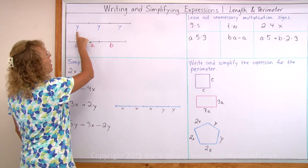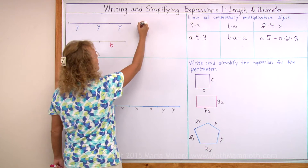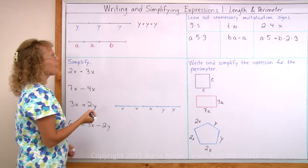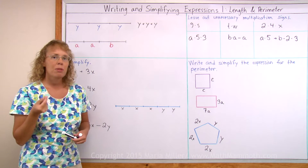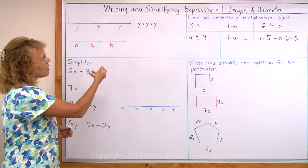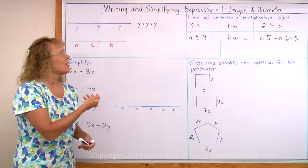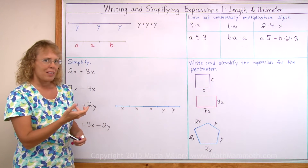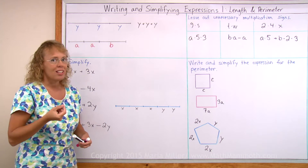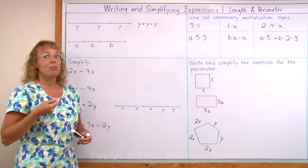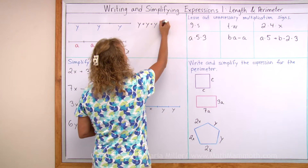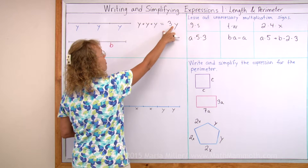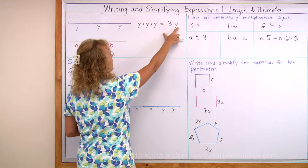That would be y plus y plus y. We add those three lengths. But there is a simpler way to write this expression because this is repeated addition — just like if here was 81 plus 81 plus 81, there's a quicker way, and that is multiplication. Multiplication is repeated addition, so this is three times y, written as 3y. I don't have to write a multiplication sign between a number and a letter.